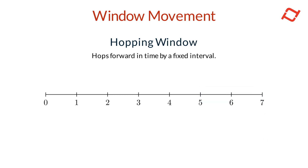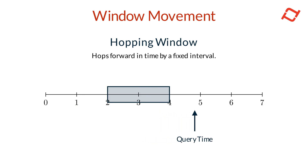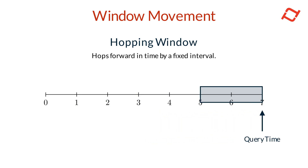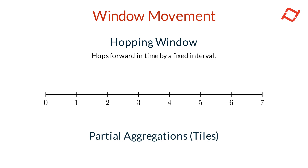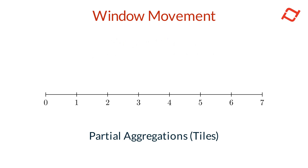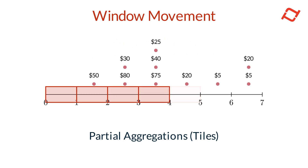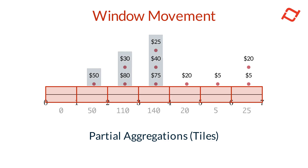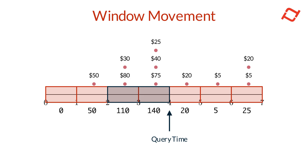A hopping window moves forward in fixed intervals, creating non-overlapping or partially overlapping windows. Each window aggregates data over a fixed duration and advances at regular steps, such as every one hour. While hopping windows may introduce a slight delay in data freshness due to periodic updates, they can be more performant than sliding windows because data can be processed in partially aggregated tiles, reducing computational load. At query time, these pre-aggregated tiles are combined to generate the fully aggregated value, making query time performance much faster.